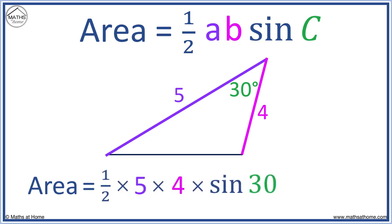Which equals 5. The area is 5 units squared. We simply multiply 1/2 by the two sides and the sine of the angle between them.